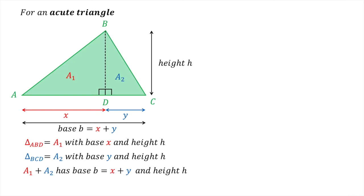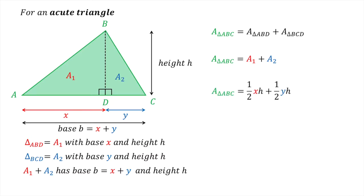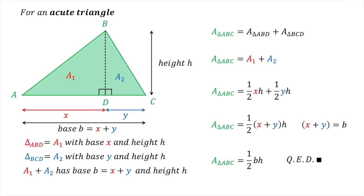With these definitions, we can begin the derivation of the formula for the area of an acute triangle. Using algebra, the area of triangle ABC equals the area of triangle ABD plus the area of triangle BCD, or equivalently A1 plus A2. Since triangles ABD and BCD are right triangles, we can express the sum of their areas as half xh plus half yh. We can factorise this as half times (x plus y) times h. Recalling that x plus y equals b, the base, we get the area of triangle ABC equals one half times base times height. Two triangles done, one more to go.